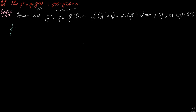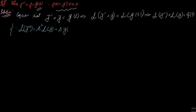Let us take the Laplace of y double prime — the second derivative. Applying the formula: s squared times L{y} minus s·y(0) minus y'(0), plus L{y}. Here y(0) is 0, y'(0) is 0, and the other term is also 0.